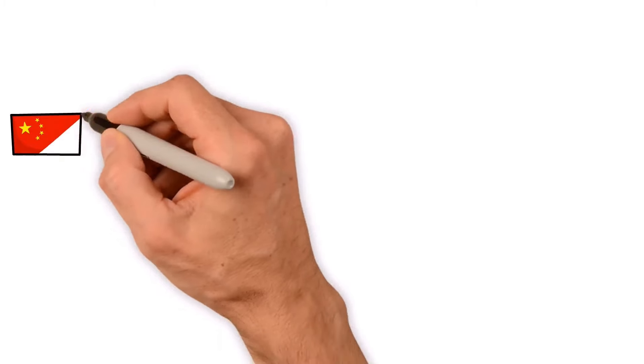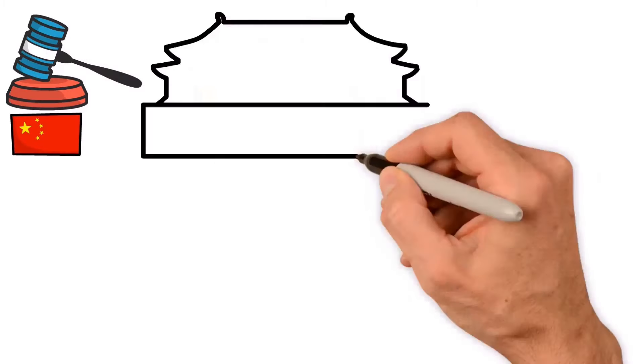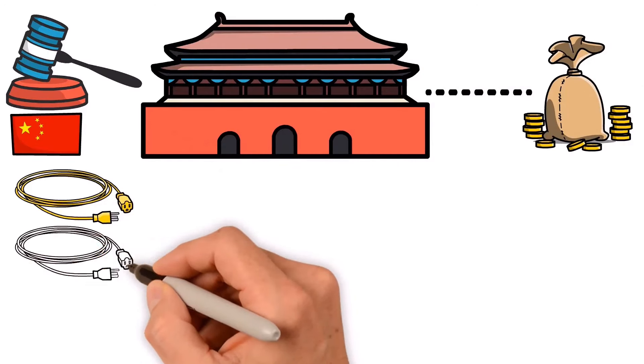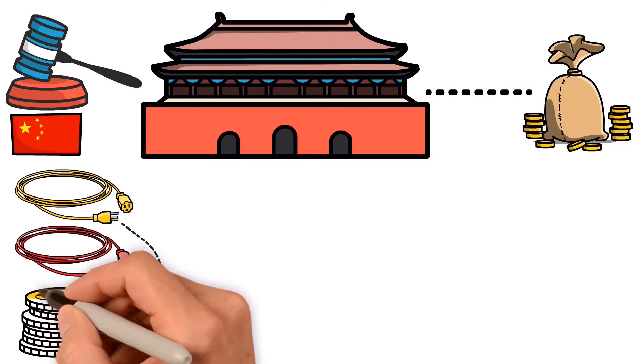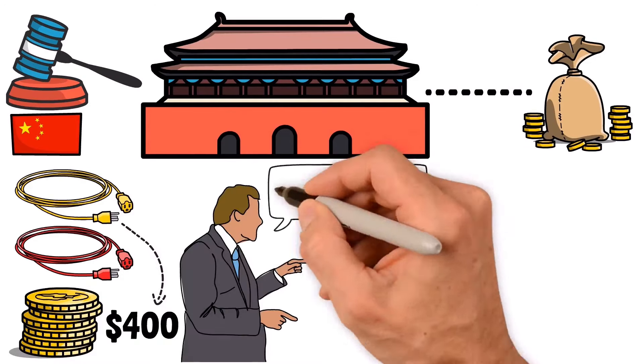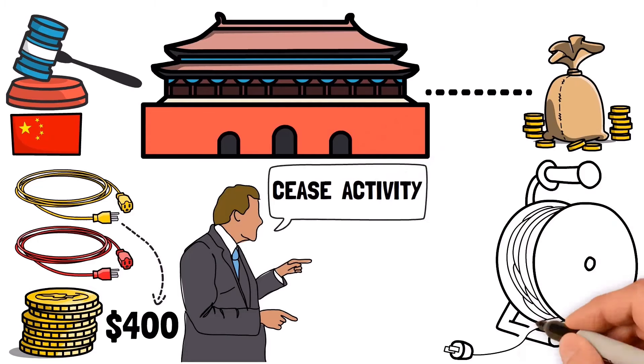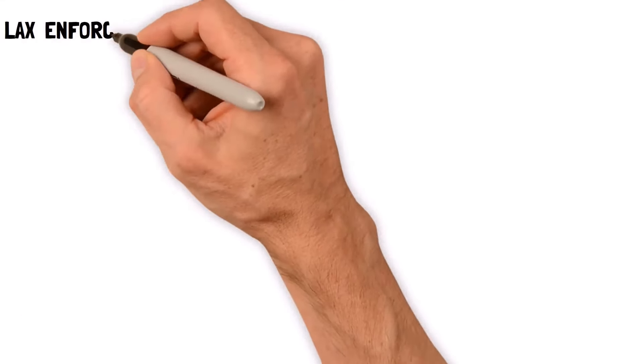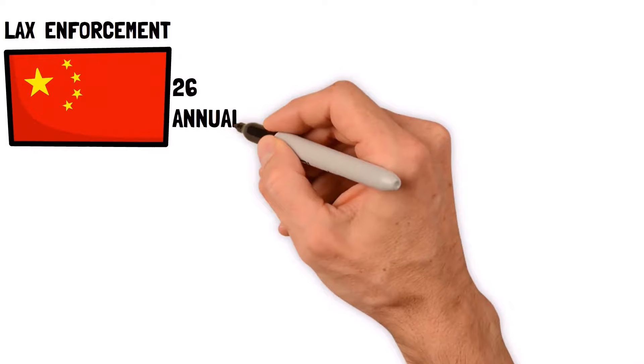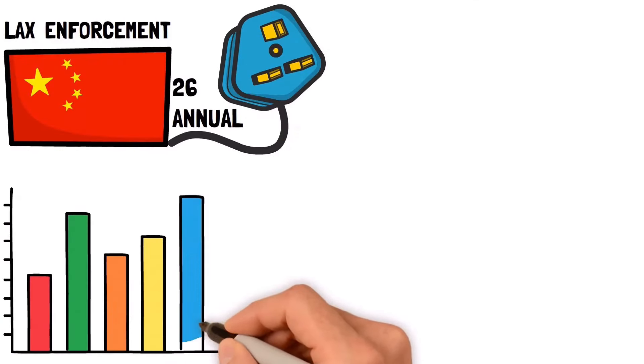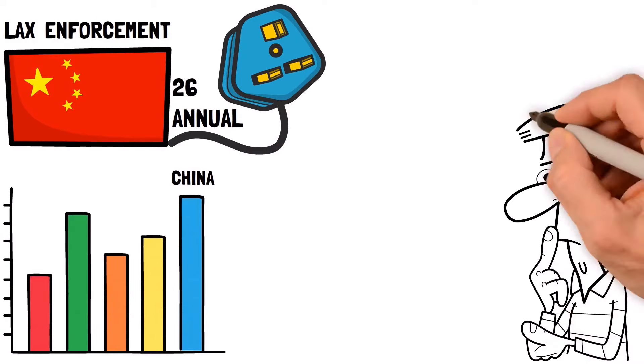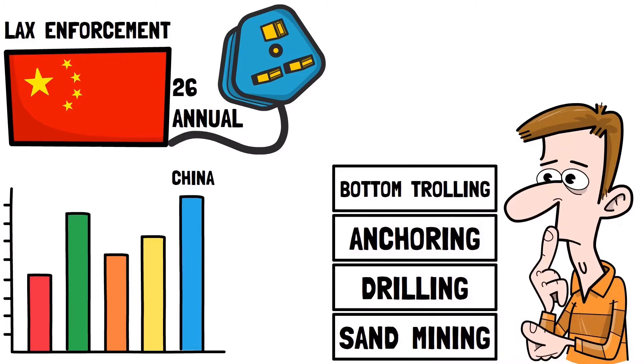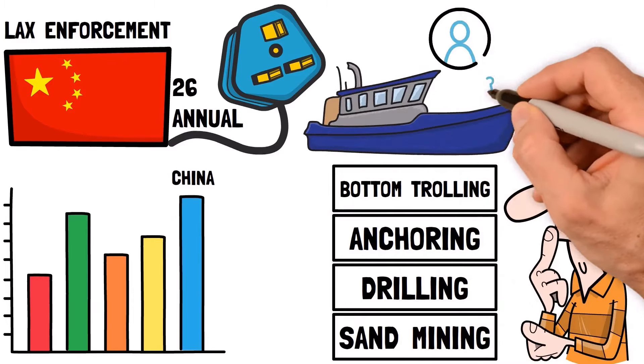Chinese law meanwhile is inconsistently enforced. Beijing imposes penalties based on the degree of interference. Intentional or negligent cable damage brings a $400 fine, but operators can also be ordered to cease activity. Laying unauthorized cables also attracts a $28,000 fine, but lax enforcement means China averages 26 annual cable defects, the most of any state. This has precipitated a recent crackdown on activities like sand mining, drilling, anchoring and bottom trolling. Ships suspected of breaking military cables have also been seized.